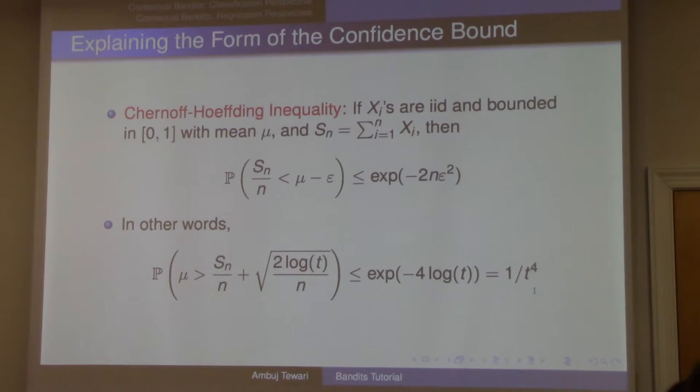The point is you get some big inverse polynomial power here, 1/t to some big power, so that they can do—there's a lot of union bounding going on, like of different events failing over different time steps. So you're building these confidence intervals, but they only hold probabilistically. What you want to make sure is that the overall probability of any of those confidence intervals failing to upper bound the mean is small.